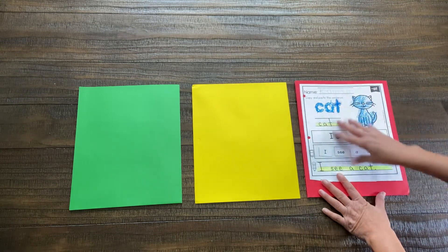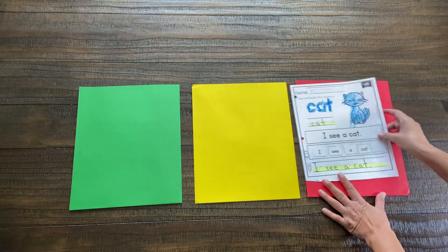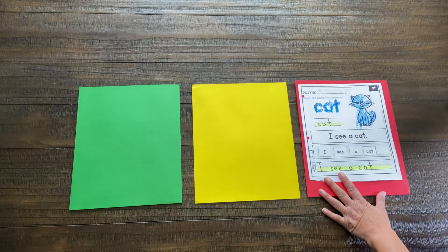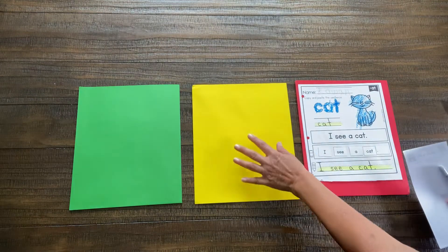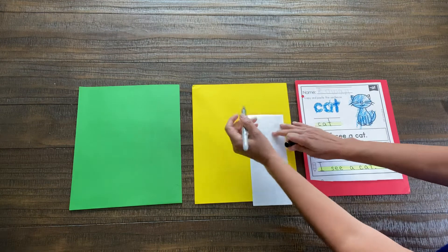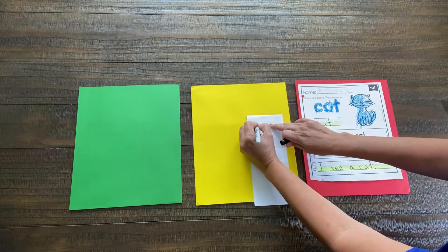So you would look at this with the student, and you would work with them to determine what steps need to be done. And then you may want to either make a list for them or have them make a list. So the first thing we're going to have to do is write your name.